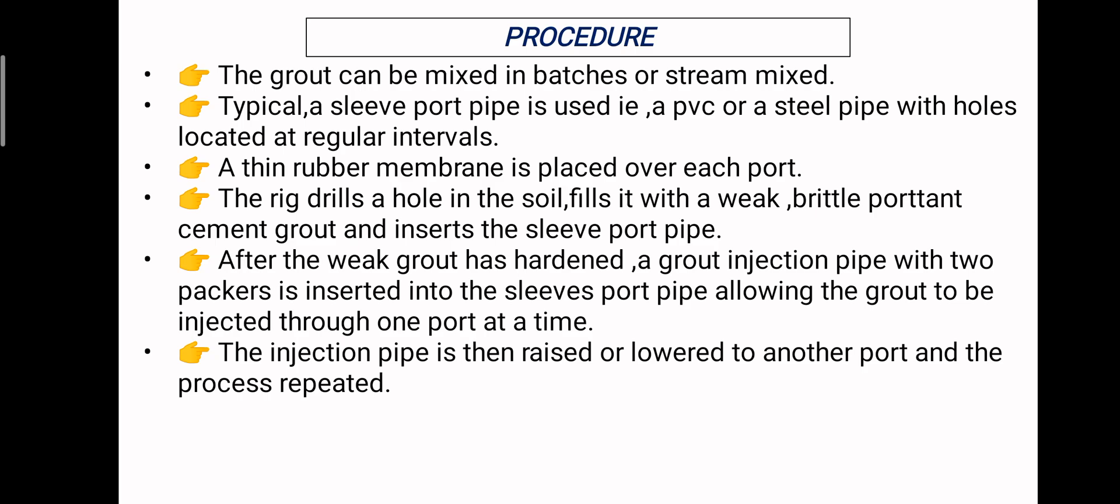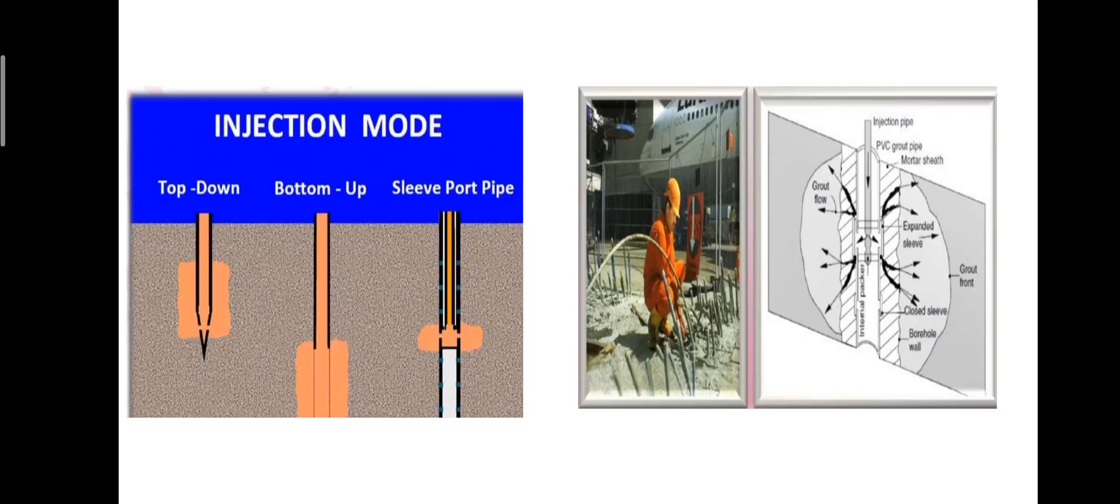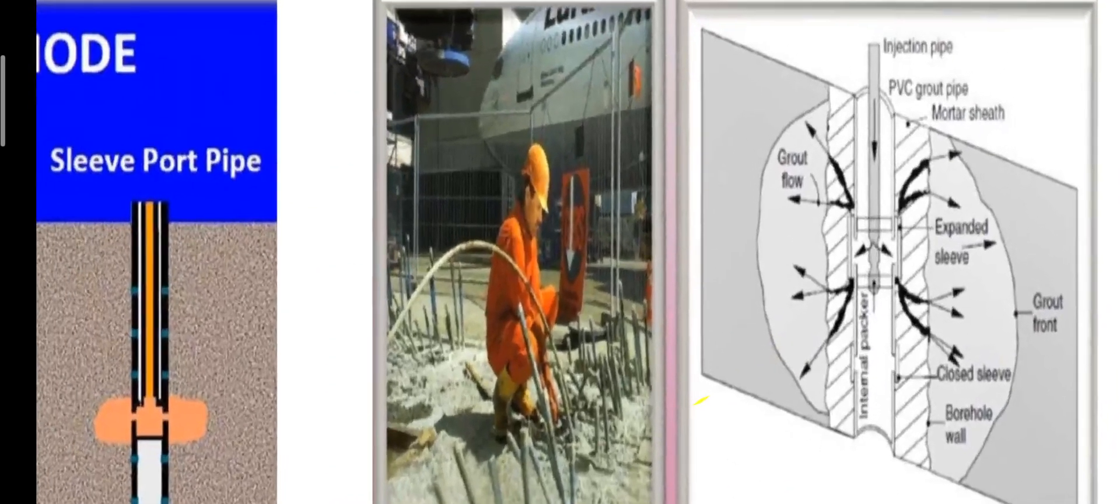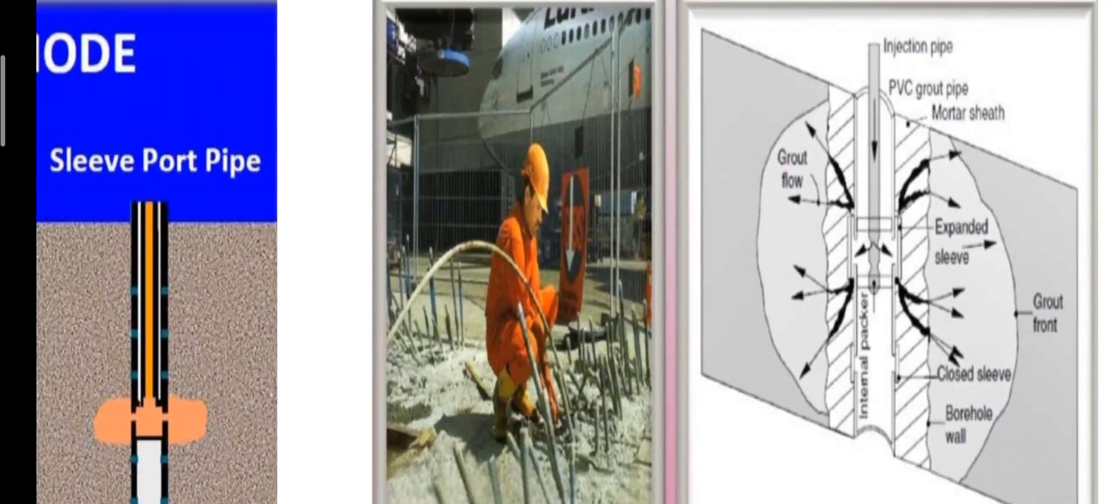The procedure for permeation grouting: the grout can be mixed in batches or stream mixed. Typically a sleeve port pipe is used. This is the overview of a sleeve port pipe: a PVC or steel pipe with holes located at regular intervals. A thin rubber membrane is placed over each port.